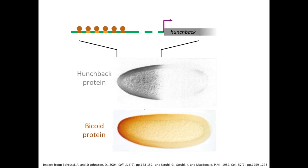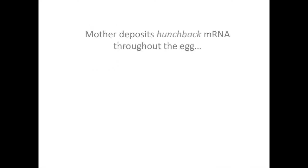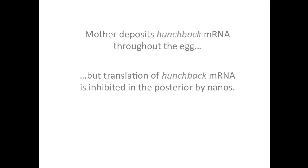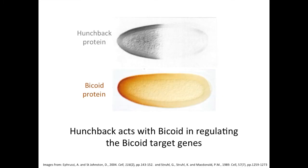In addition to this Bicoid-driven hunchback expression, the mother fly also deposits some hunchback messenger RNA into the egg. But translation of hunchback RNA is inhibited in the posterior of the embryo through the action of the posteriorly restricted nanos protein, as described in the text and in box 13.2. The posterior repression of hunchback translation further restricts hunchback protein to the anterior region of the embryo. It turns out that this hunchback protein in the anterior region acts with Bicoid in regulating the Bicoid target genes. So, regulating transcription of target genes along the Bicoid gradient is the first way in which Bicoid protein acts.